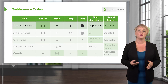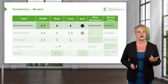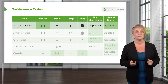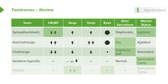Here's a review of the toxidromes. Sympathomimetics: hypertensive, tachycardic, agitated mental status. Anticholinergic patients look a lot like sympathomimetics except they have very dry skin and dry secretions. Cholinergic patients are copiously wet — diaphoretic skin, increased secretions — and typically somnolent rather than agitated. Sedative hypnotic patients will be sedated. Opioid patients will also be sedated but present with miosis and respiratory depression. This should help you rapidly narrow your toxicologic differential when facing a patient with an exposure.